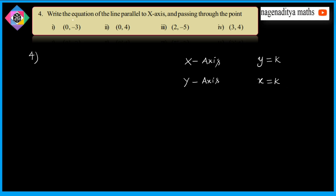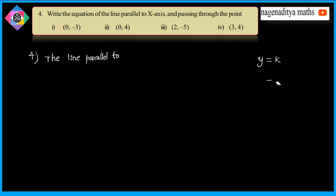So, the line parallel to x-axis is of the form y is equal to k. The line parallel to x-axis is of the form y is equal to k.